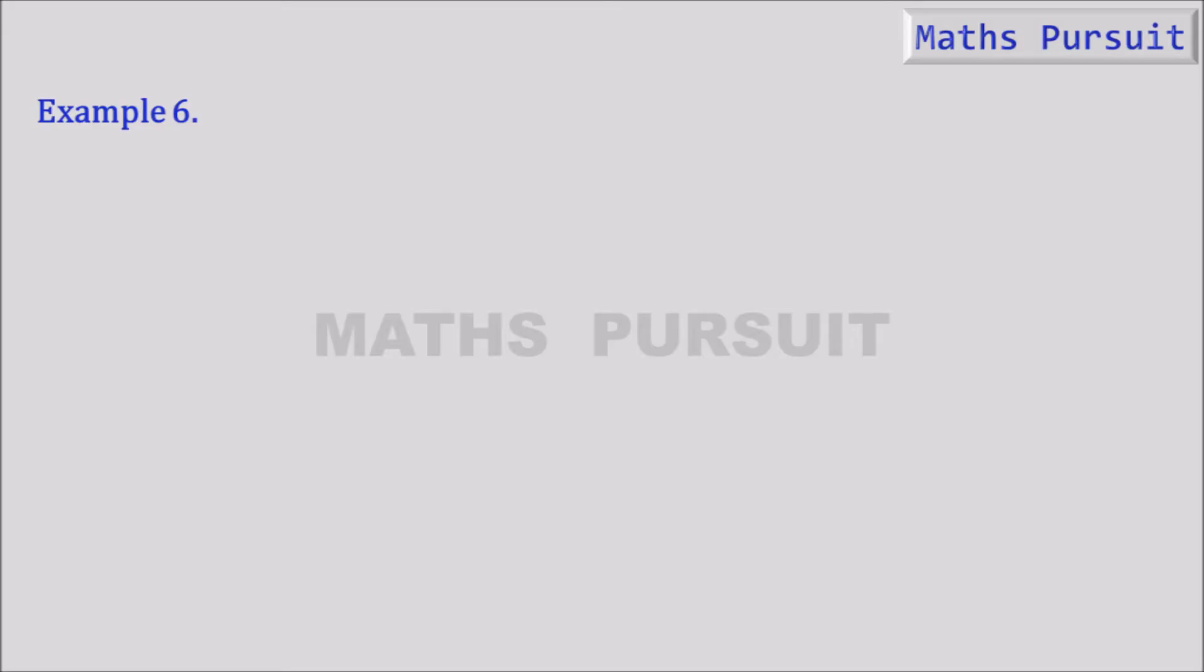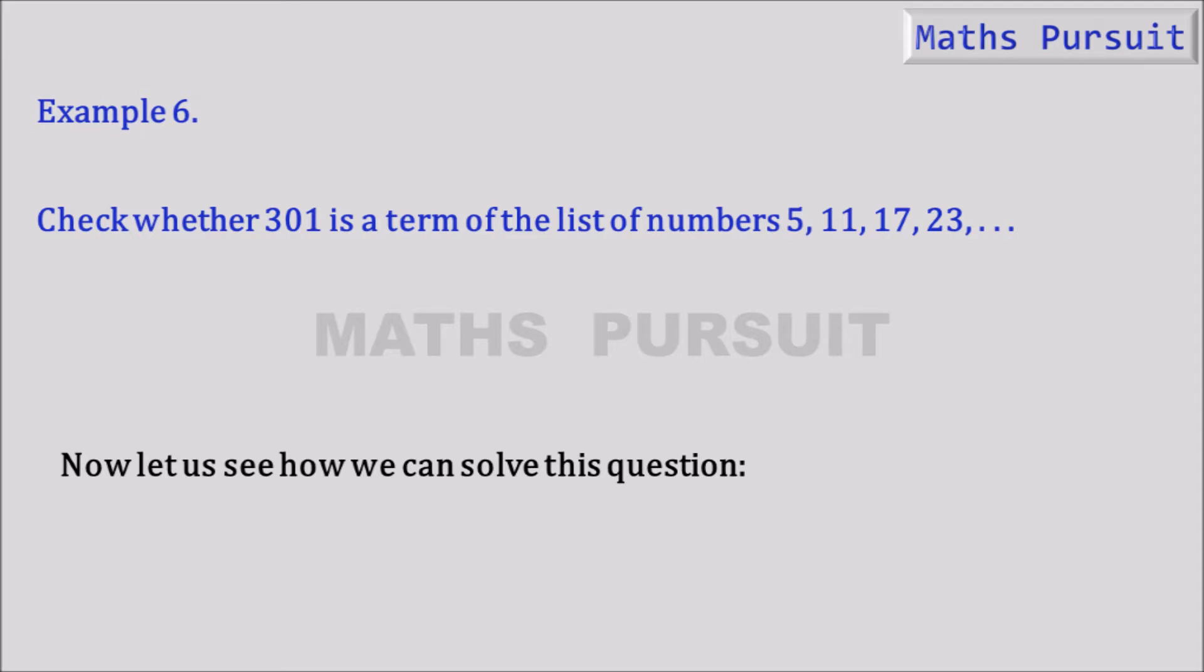Coming to example 6, it is given that check whether 301 is the term of the list of numbers 5, 11, 17, 23. That means we need to see if 301 is a term from among the given series. So let's see how we can solve this question.